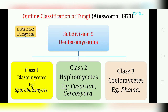The fifth subdivision of Division Eumycota is Deuteromycotina. These are properly called conidial or imperfect fungi. Sexual reproduction is absent and they reproduce only asexually by conidial spores. They are divided into three classes: Blastomycetes, Hyphomycetes, and Coelomycetes.